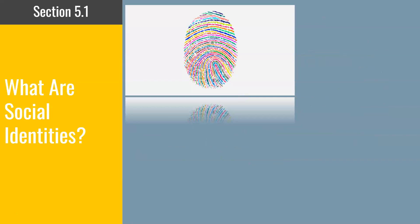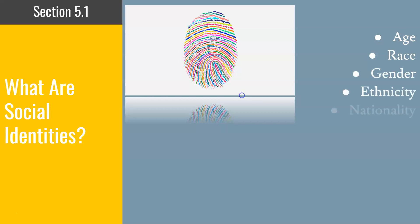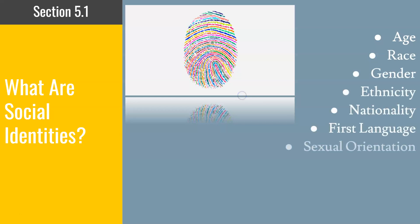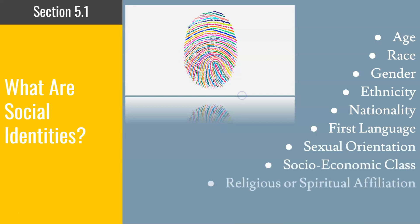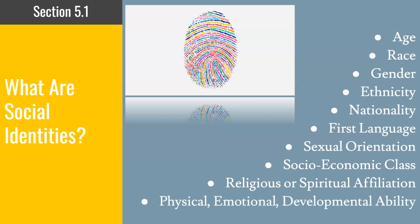When we're talking about social identities, what are social identities? Specifically, we're talking about age, race, gender, ethnicity, nationality, first language, sexual orientation, socioeconomic class, religious or spiritual affiliation, and physical, emotional, and developmental ability.